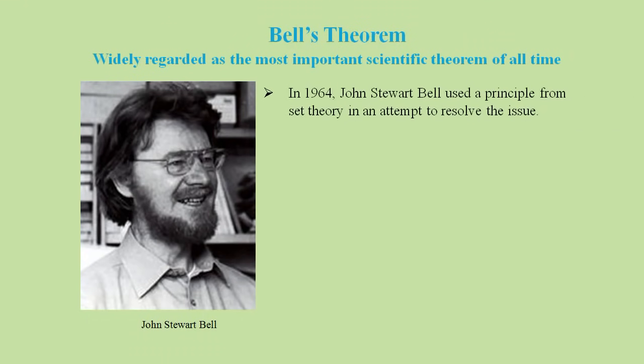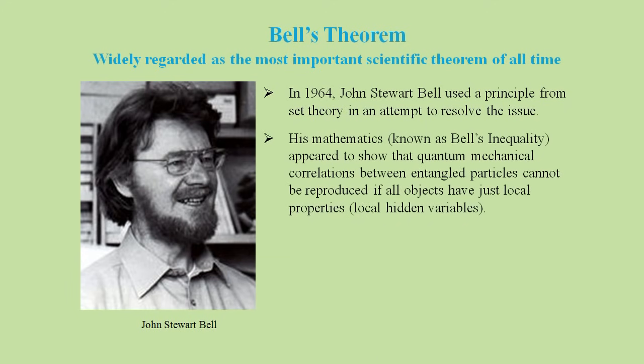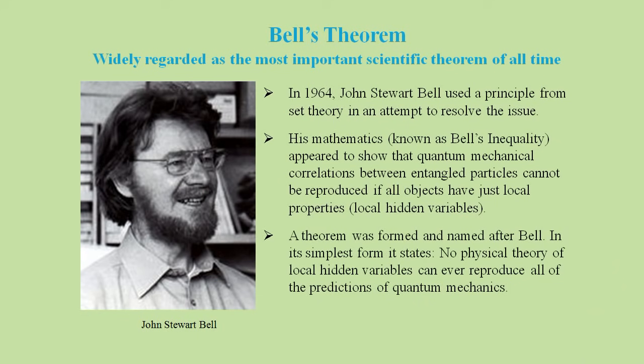In 1964, John Stuart Bell used a principle from set theory in an attempt to resolve the issue. He produced a mathematical expression called Bell's Inequality that appeared to show that certain correlations between entangled particles cannot be reproduced if all objects have just local properties or what Einstein called local hidden variables. A theorem was formed and named after Bell. The theorem states that local hidden variables cannot reproduce the predictions of quantum mechanics.